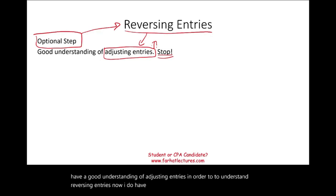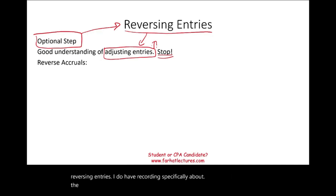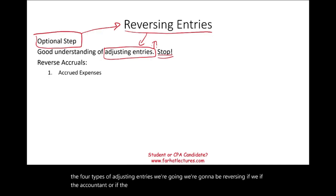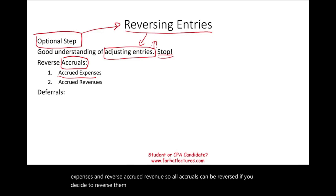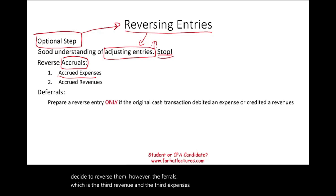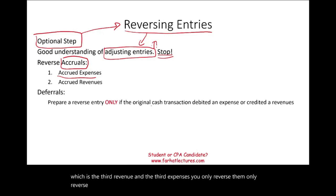I do have recordings specifically about the four types of adjusting entries. We're going to be reversing — if the accountant or the business decides to do a reversal — accrued expenses and accrued revenues. So all accruals can be reversed if you decide to reverse them. However, deferrals — deferred revenue and deferred expenses — you only reverse them if the original cash transaction debited an expense or credited a revenue.